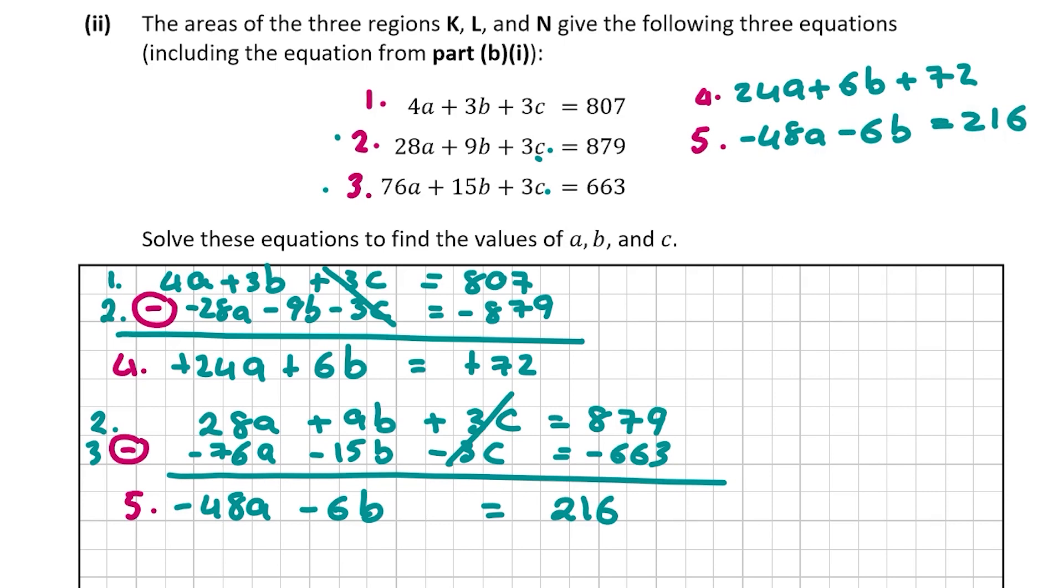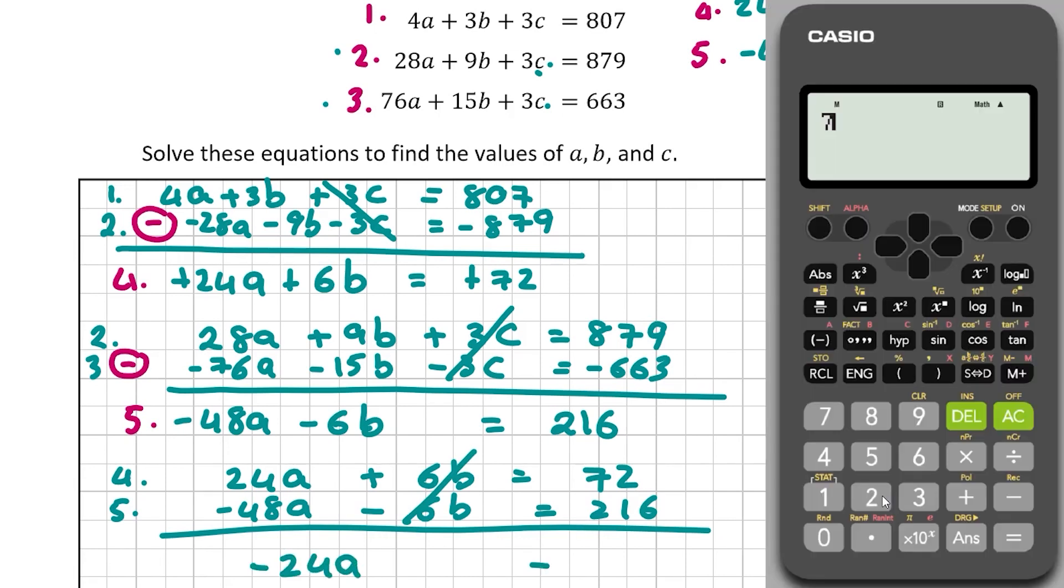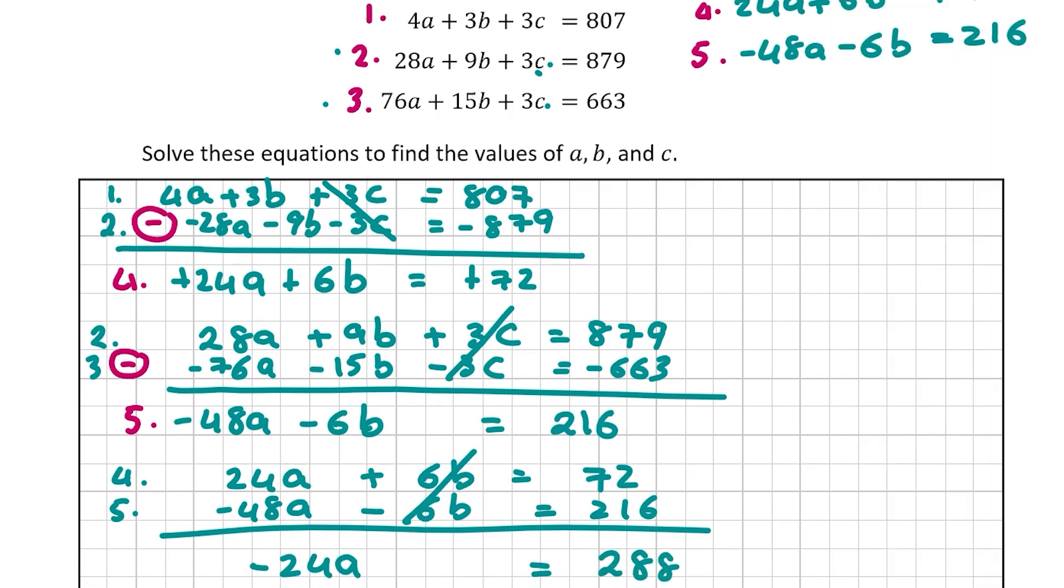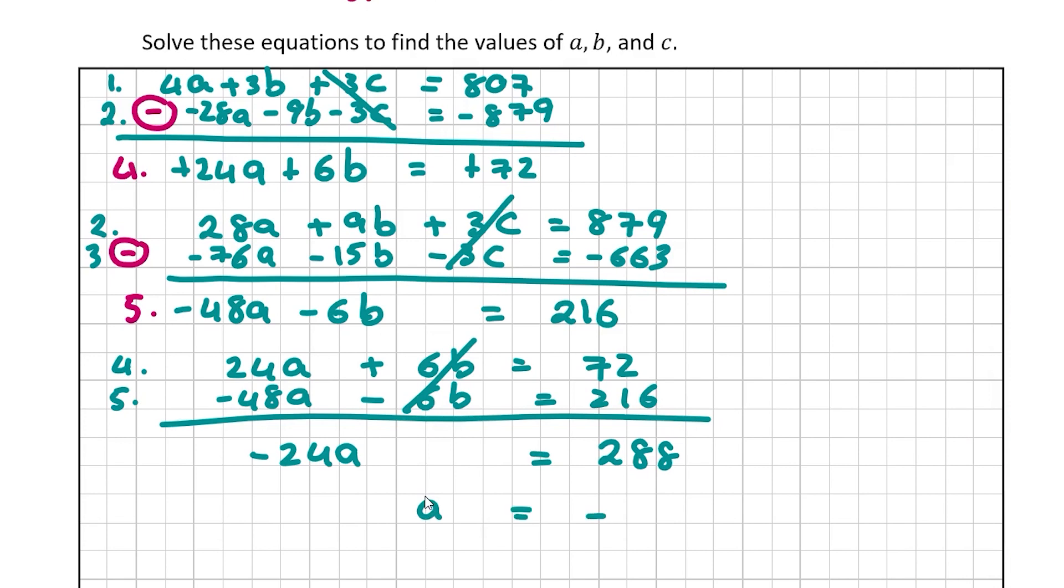Now let's find the value of A by equating equations 4 and 5. 24A + 6B = 72 and -48A - 6B = 216. So we can get rid of 6B - 6B, that's zero. 24A - 48A is -24A, and that equals 72 + 216 = 288. So now let's divide 288 by -24 to find the value of A, and that is -12. So A = -12.